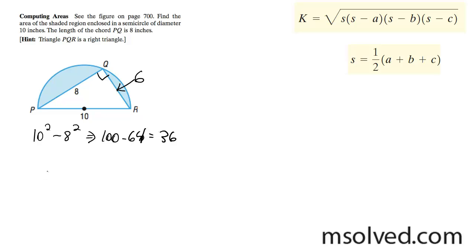So this means that the area for triangles is one half times the base times the height, which is going to be equal to one half times 6 times 8, which is going to be equal to 24.